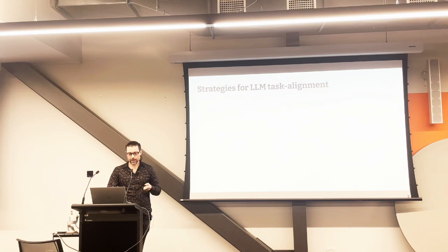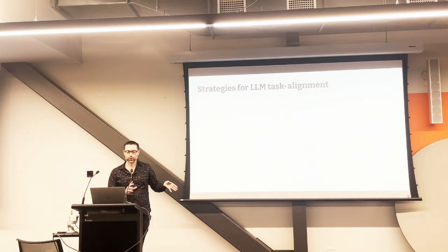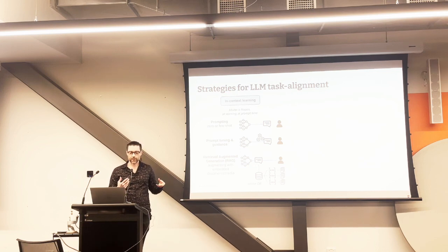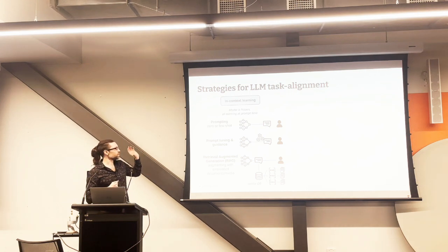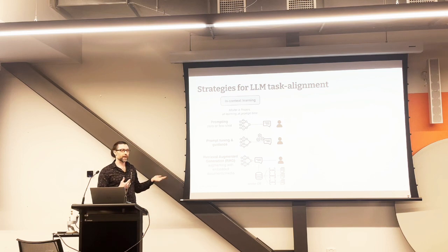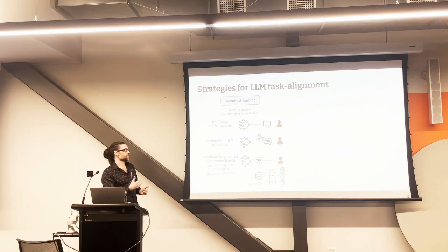Taking a step back from a higher level: if you're thinking about how to align one of these LLMs to your problem, there are two families of approaches, starting with the less complex ones first. We have in-context learning, where the model weights - the neural network - remain frozen, so we're not doing any training or updating of the network. To start with, we just have good old prompting where we're just asking it to solve the problem - like 'give me back a JSON representation of this text.' That's the zero-shot example. Or if it's not really working, give it some example input and output in the prompt - that's few-shot learning.